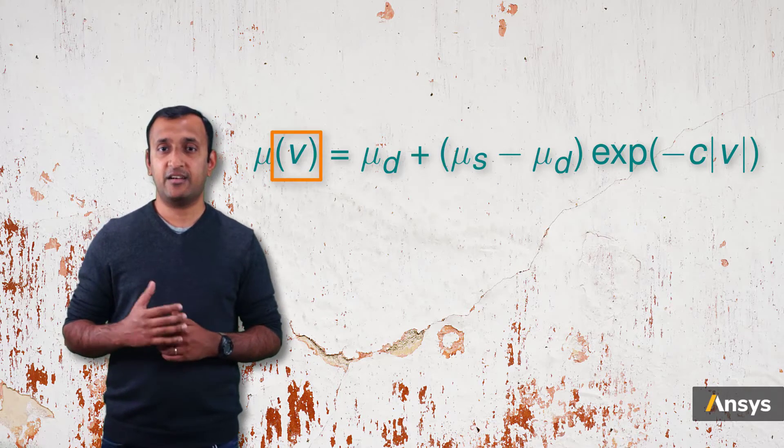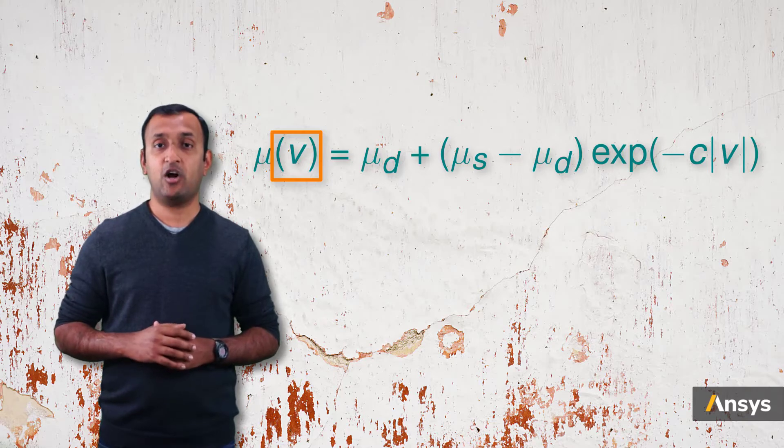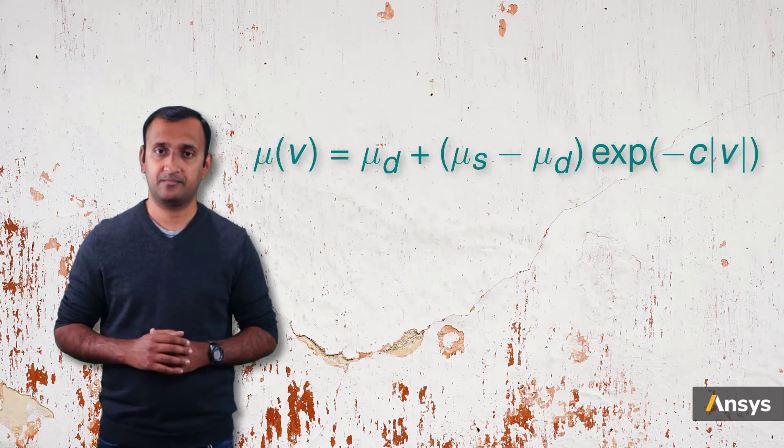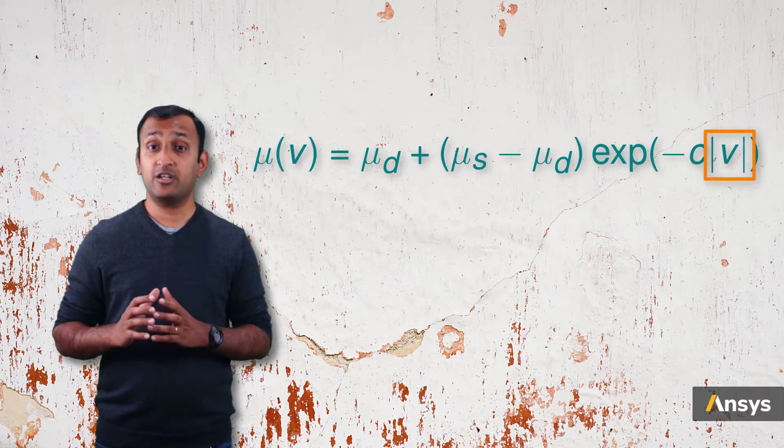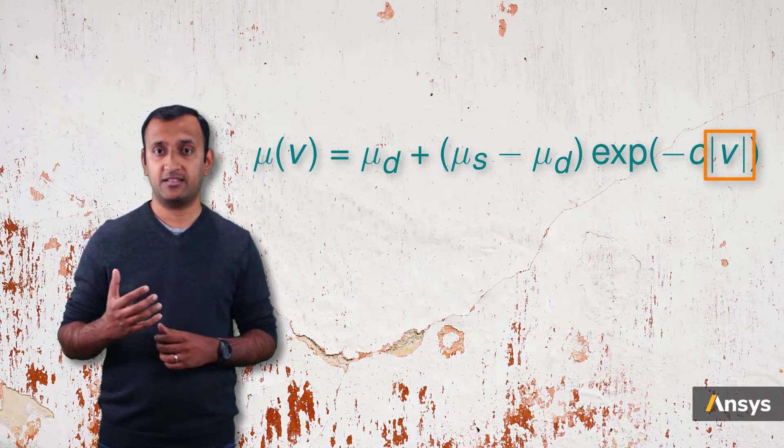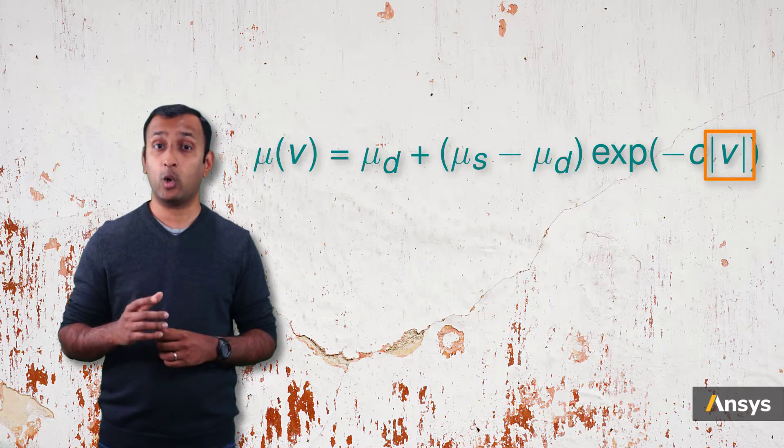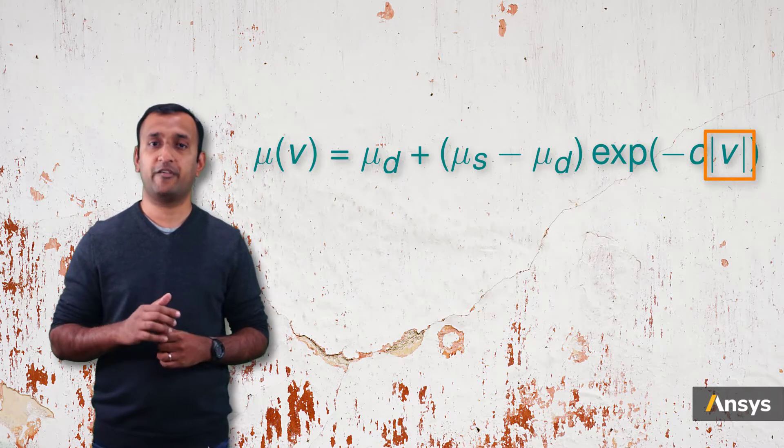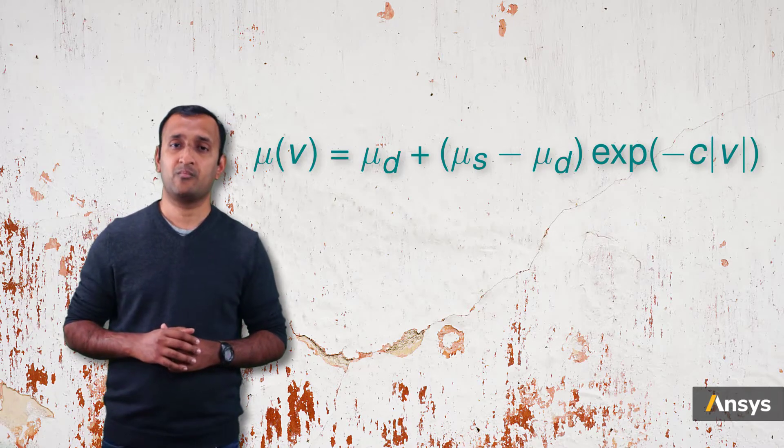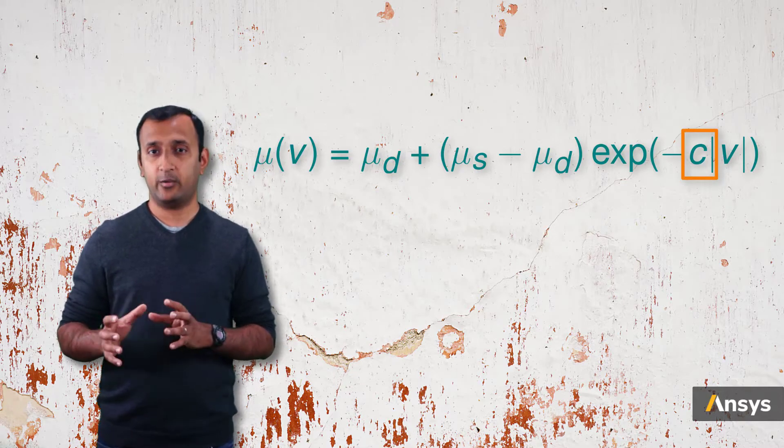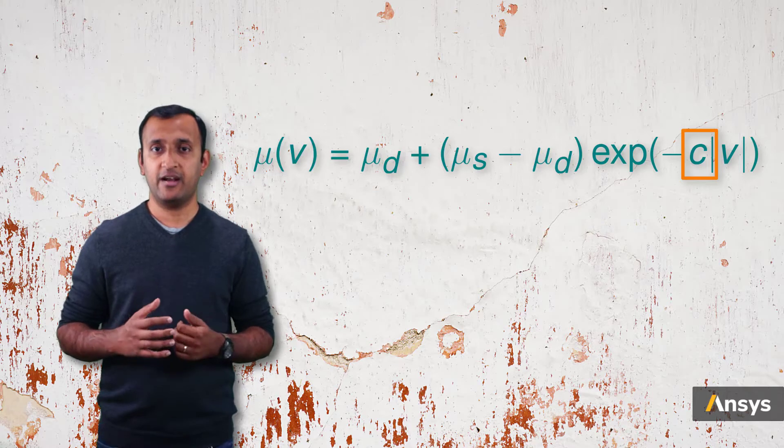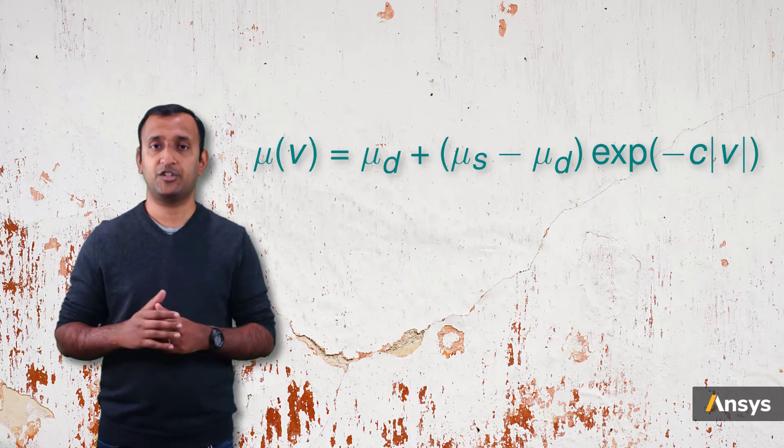V is the relative velocity between the surfaces, and called the sliding velocity. Notice that we only take the absolute value of the velocity as the transition of coefficient of friction only depends on the magnitude of velocity. And finally, c is a decay constant that controls the rate at which the static coefficient of friction transitions into the dynamic coefficient of friction.